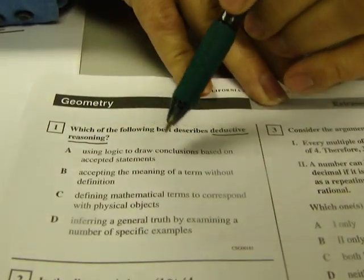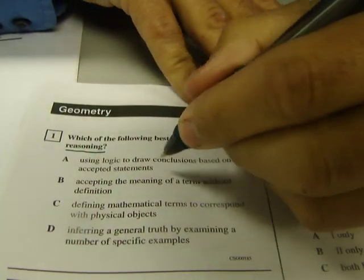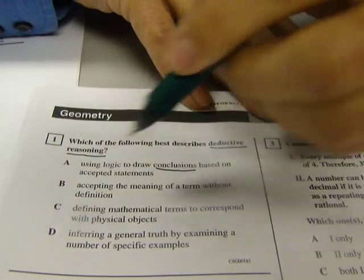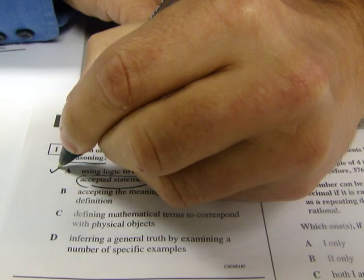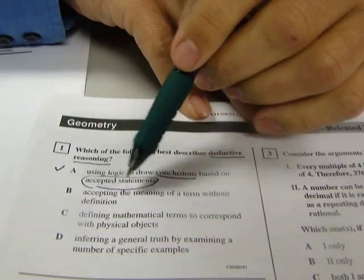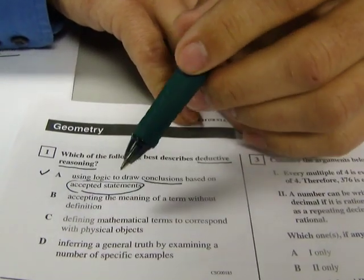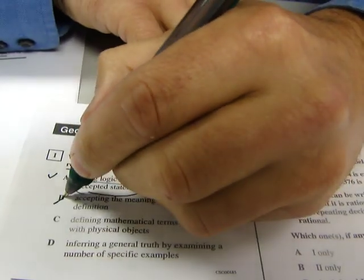So A says using logic to draw conclusions, that sounds like new information, based on accepted statements. So that's known information. That sounds really good. Let's see if anything's better. Accepting the meaning of an item without definition? That just sounds like a bad idea.